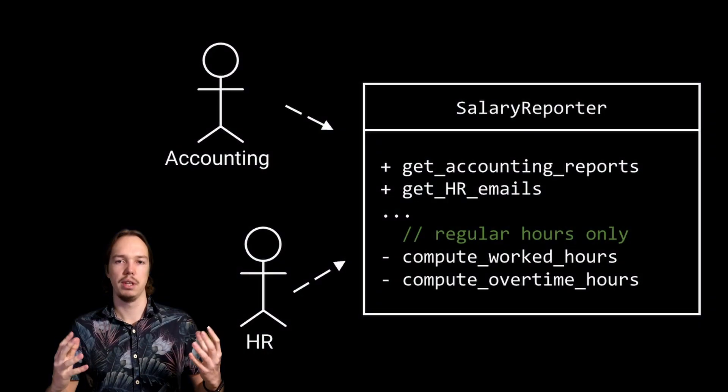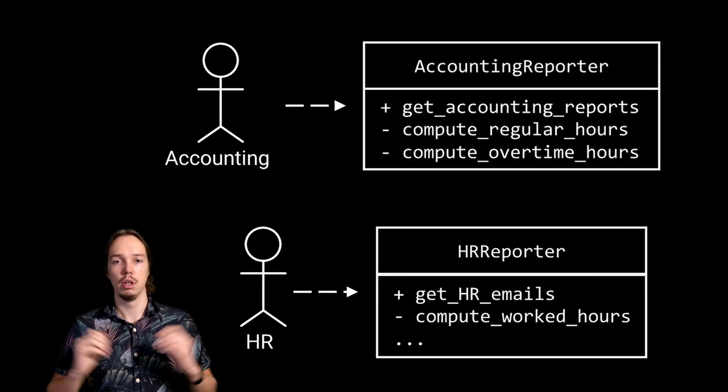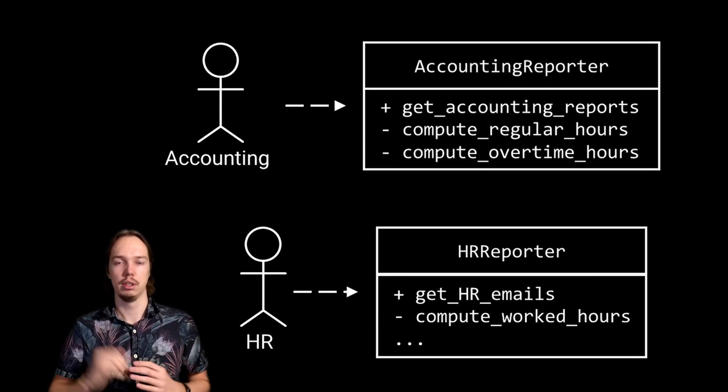It seems like just a stupid mistake, but your customer has been using this version for a full month, and their HR department now has to redo all the reports created in that time — that's a lot of time and money. These kinds of bugs get introduced all the time, especially in bigger systems, and they're really hard to find. They are caused by putting code that serves two different actors in close proximity. This would have been prevented by following the single responsibility principle. If we had split this functionality into two different modules, any change made for the accounting team could not accidentally break something for the HR team.